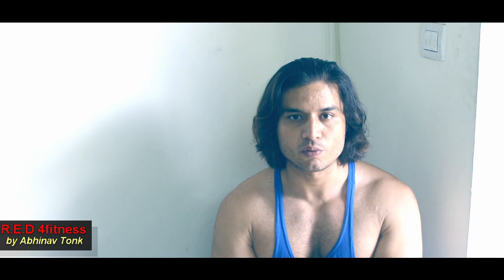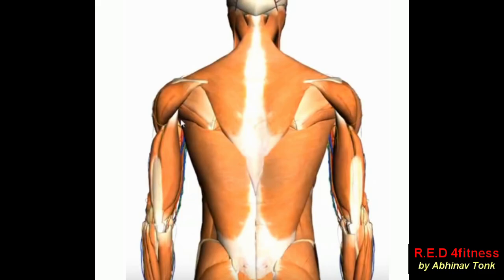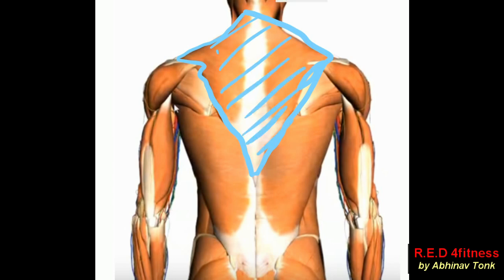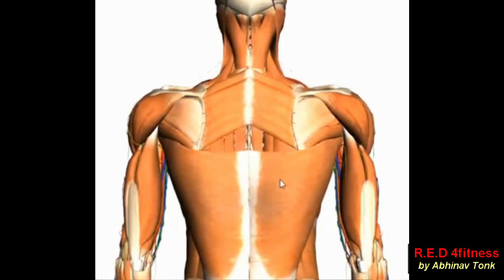Now let's look at the anatomy of rhomboid muscles in a short explanation video before we start the workout session. The rhomboid is basically a group of muscles that lies under the trapezius. The portion shown here is the trapezius muscle, present on the superficial level, but if we go one layer deep, beneath that muscle we will find the rhomboid muscle.